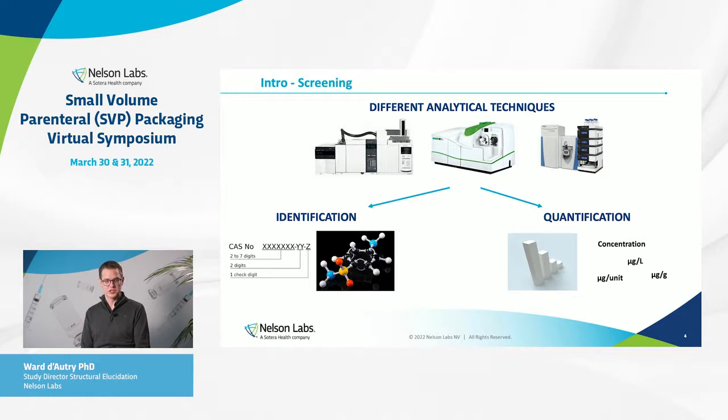Identification means labeling a compound with a unique structure if possible, or using the CAS number, which is a unique identifier for a chemical structure. Quantification — depending on whether you are in the extractables or leachables phase — can be expressed in micrograms per liter, micrograms per gram, or micrograms per unit of a stopper, for example.